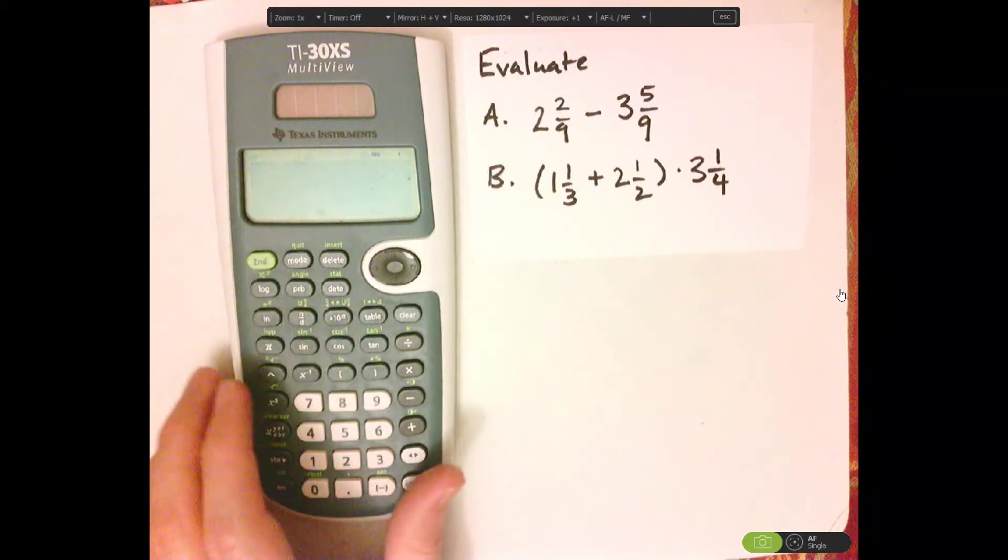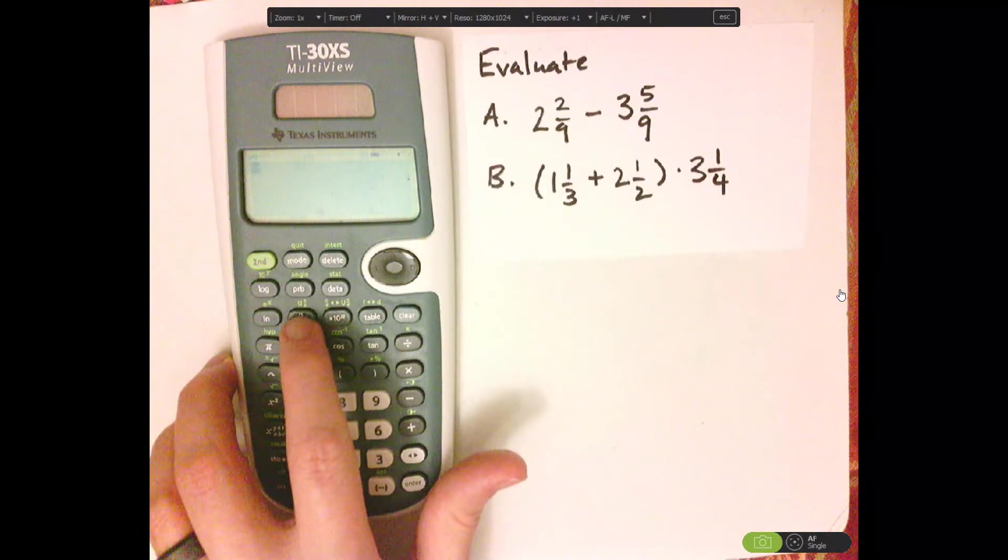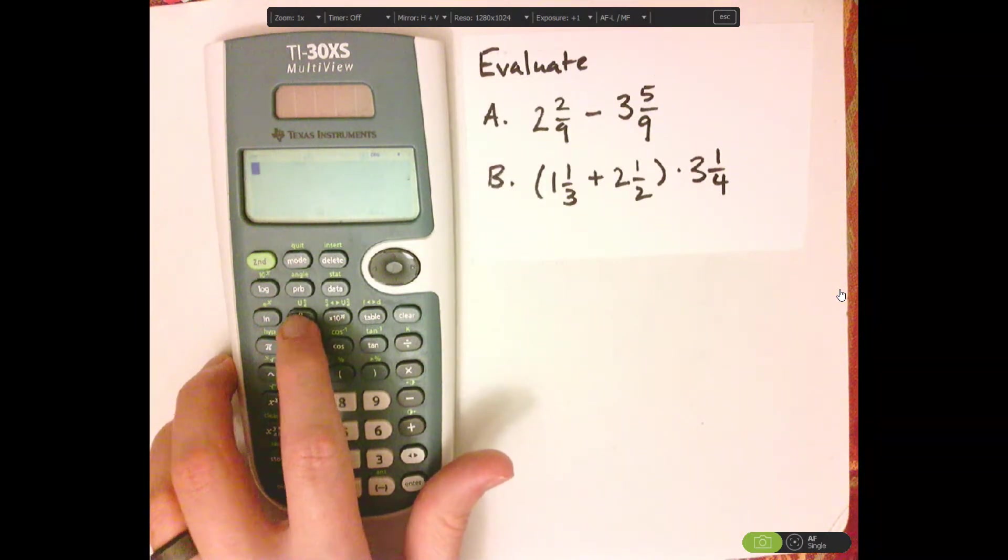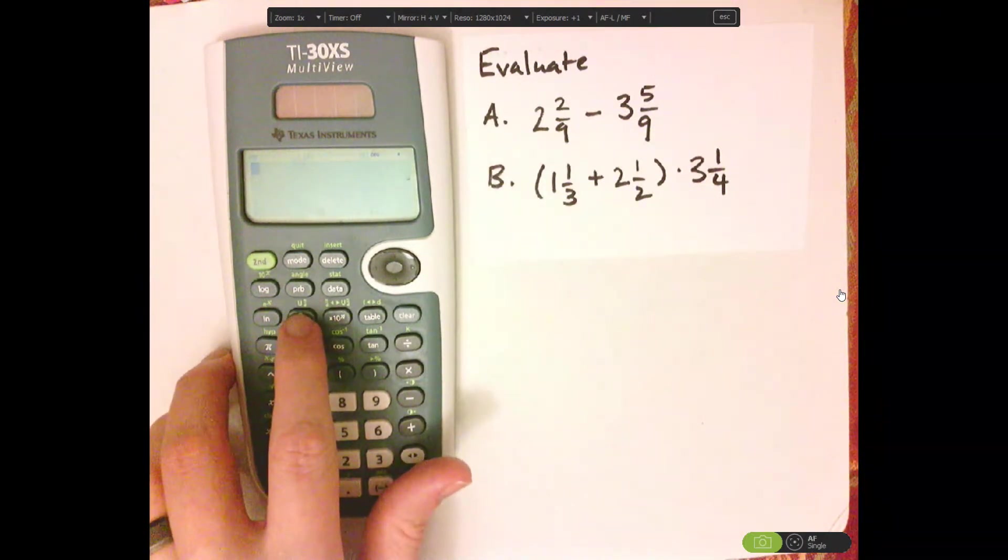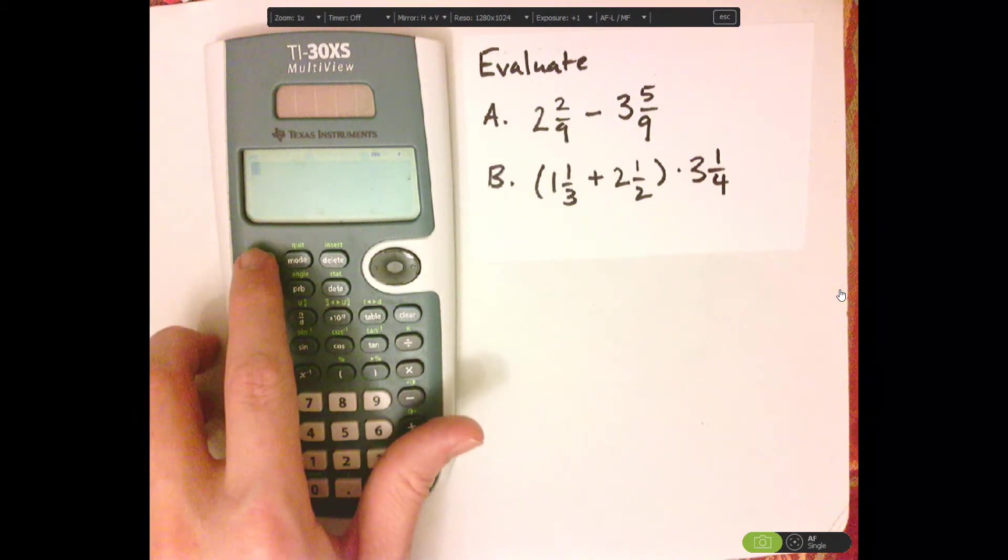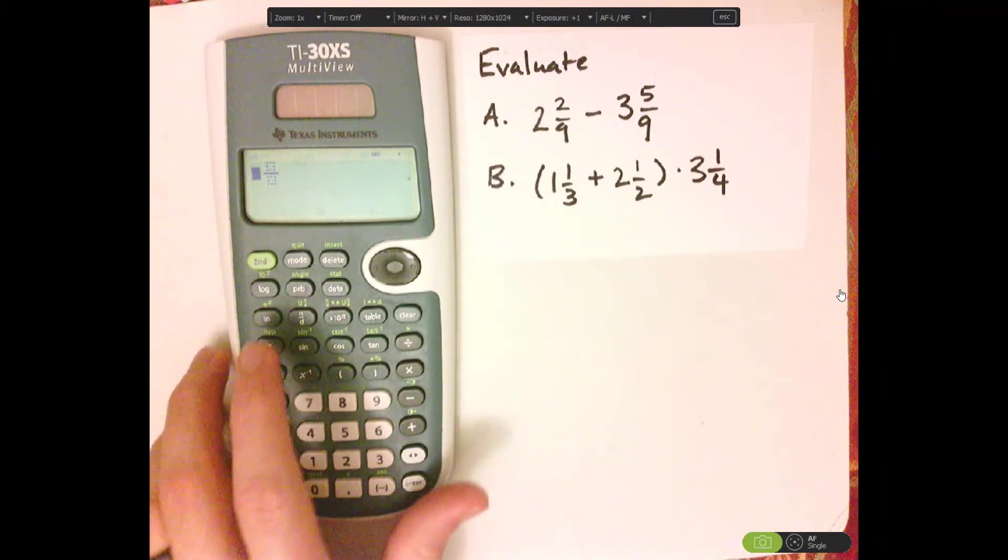Second, quit. So that's on. Now, the mixed number button is right above the fraction button. It's UND, and notice that it's green right above it. So you push second, and then that.